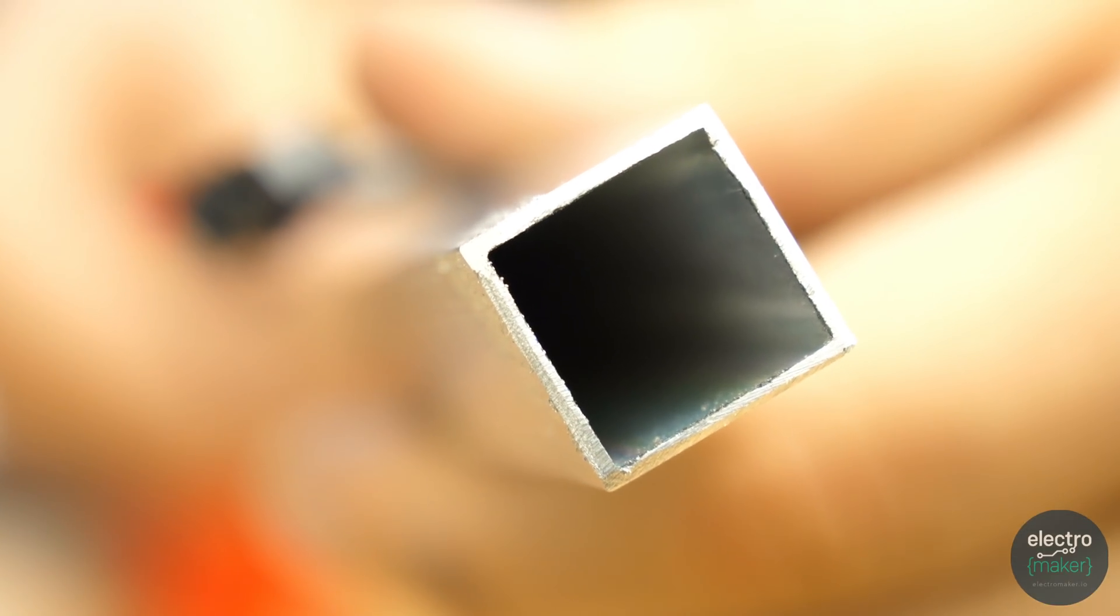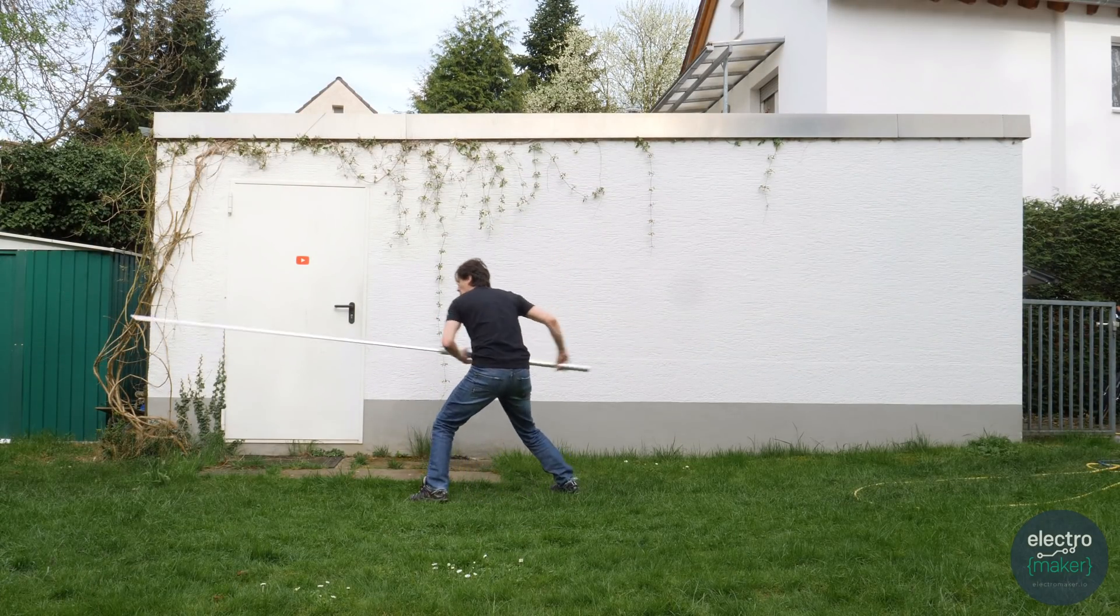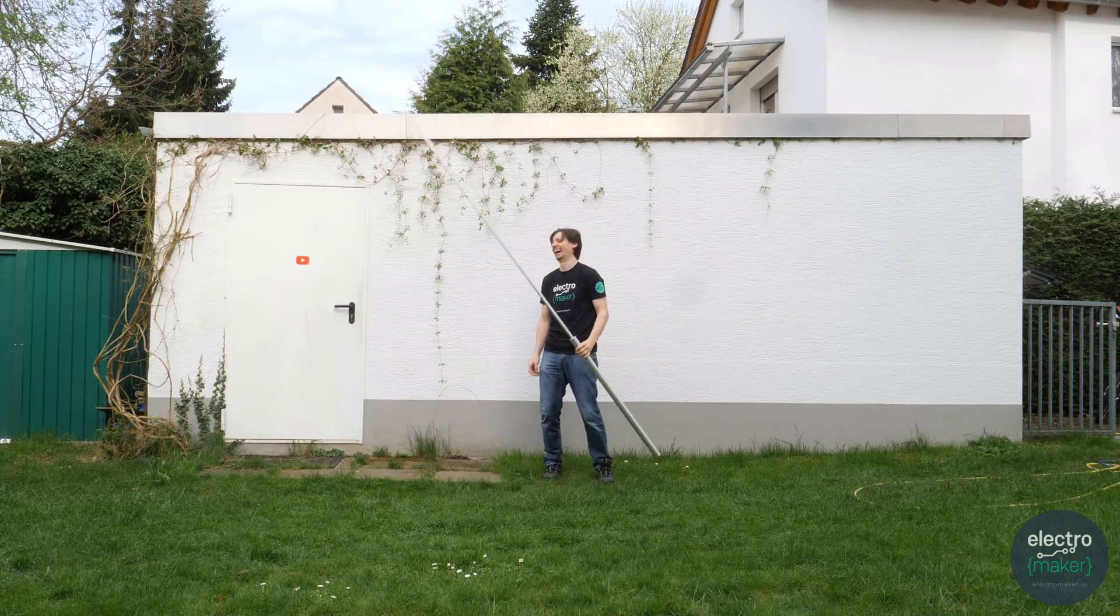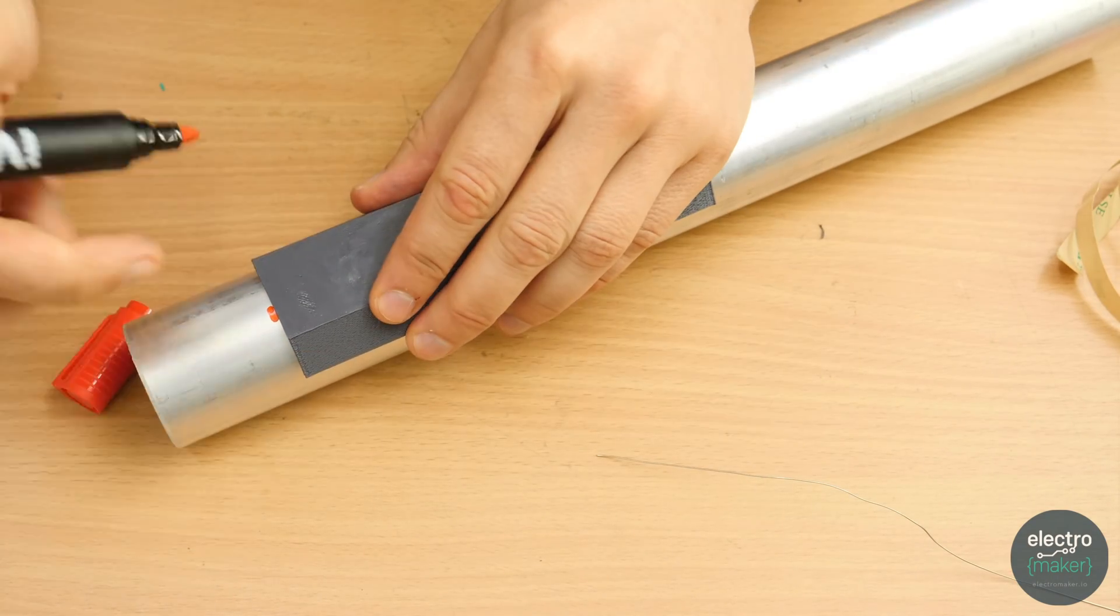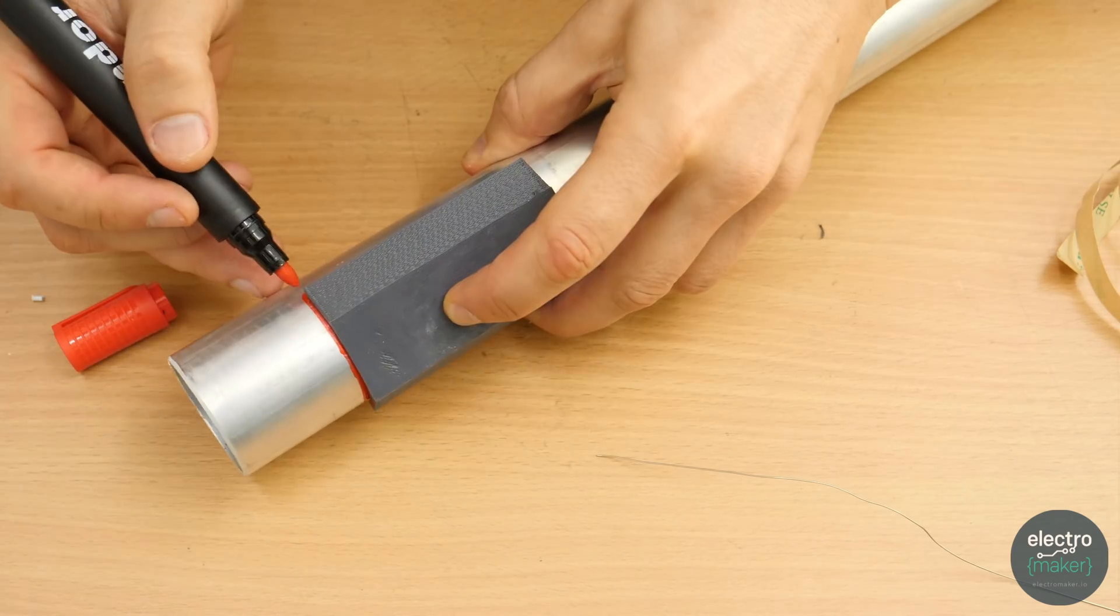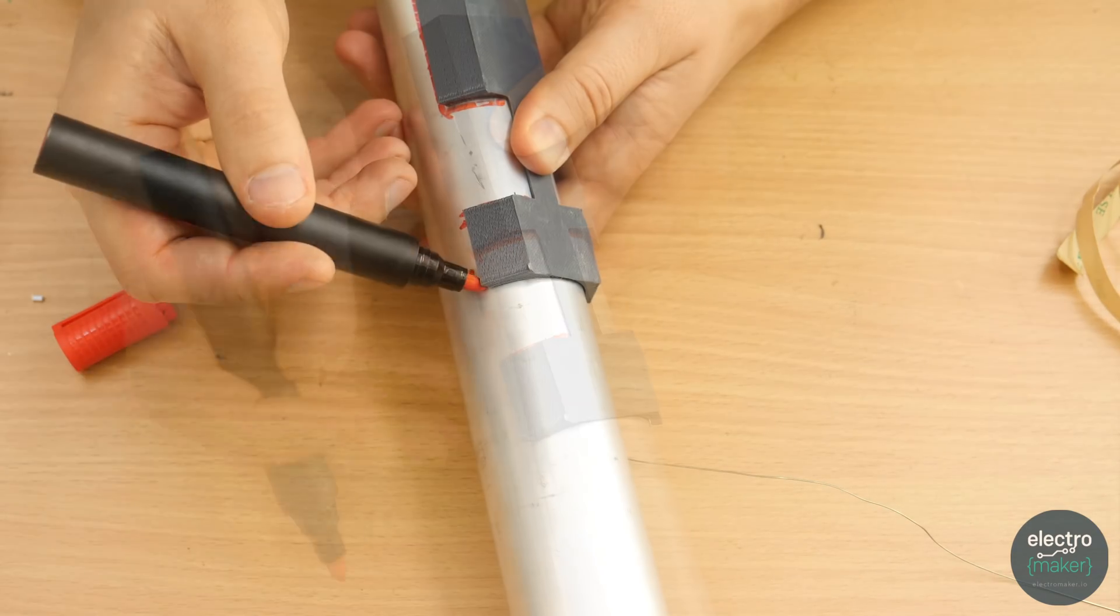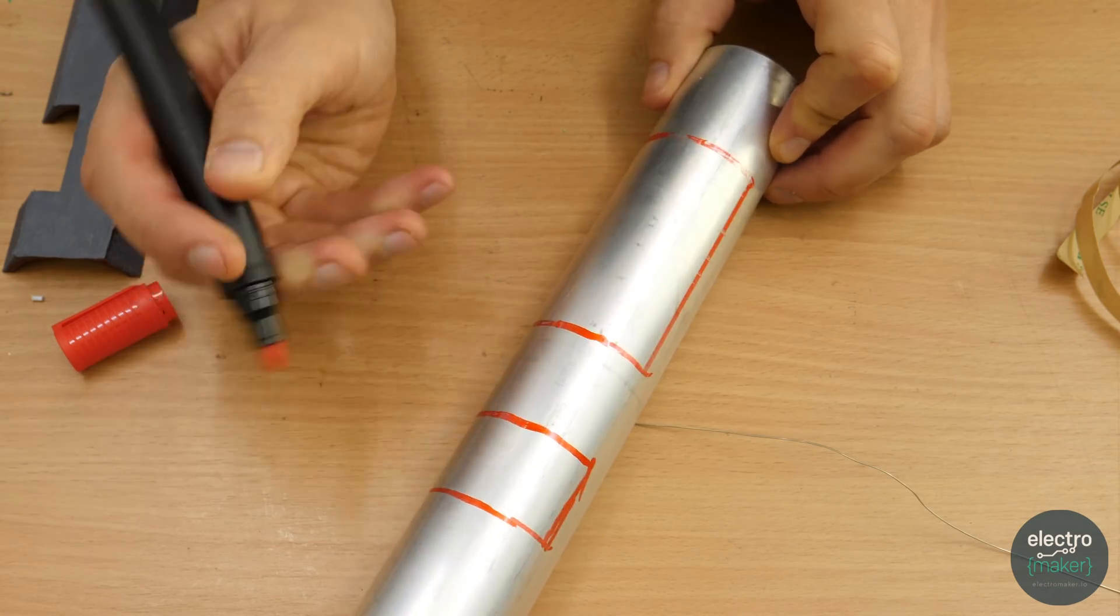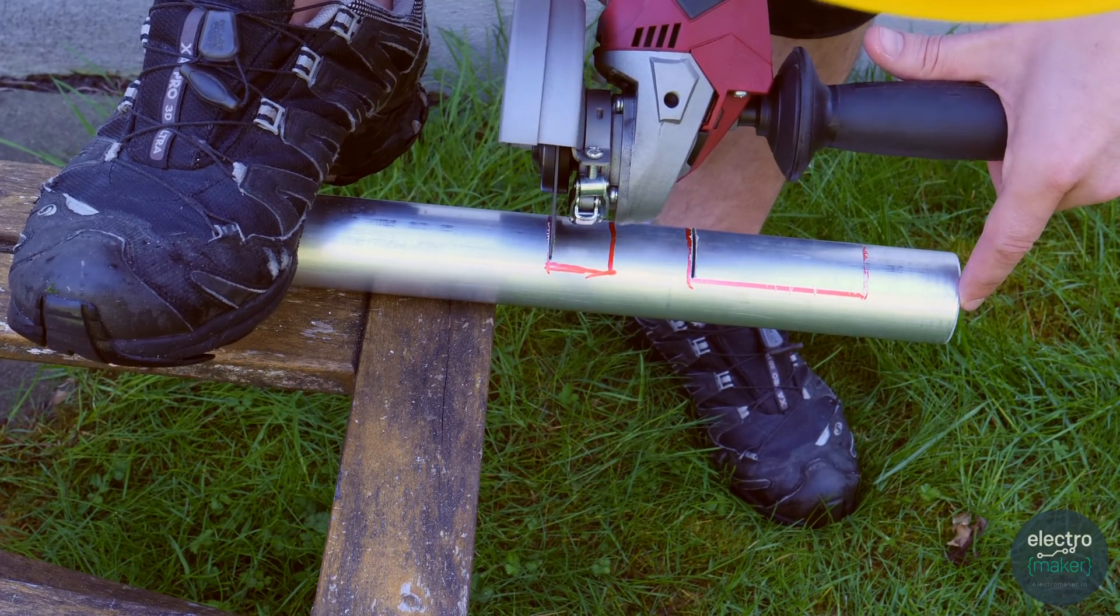I cut the rod and the pipe to length since the original size was even bigger. To get the cutouts in the pipe correctly I used a neat trick. I just printed a basic template which I could use to draw the outlines. After that I used the angle grinder to cut the openings.